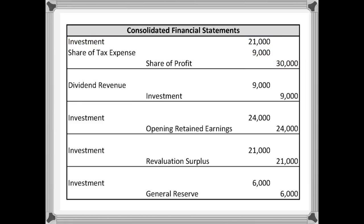The next step is to make the adjustment for any dividend revenue received. The dividend revenue was $30,000 paid by the associate, which means the investor actually received $9,000, which is 30% of that. In the investor's books, they would have shown debit cash, credit dividend revenue. We actually show this in total as a reduction in the investment, which is why the investment account is being credited, and it's not shown as dividend revenue — so we debit the dividend revenue, and that will offset what happens in the accounts of the investor.